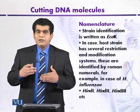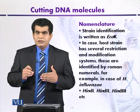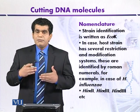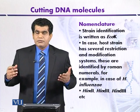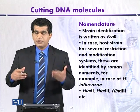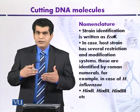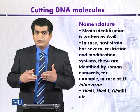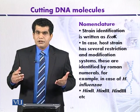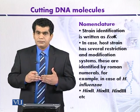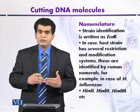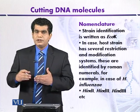Since strain D of Haemophilus influenzae produces more than one type of restriction enzyme, each enzyme is named HinD followed by a Roman numeral — for example, HinD I, HinD II, HinD III — to distinguish the different enzymes produced by that strain.